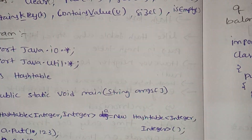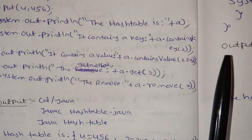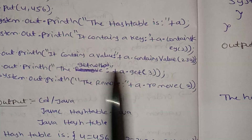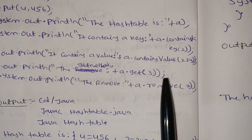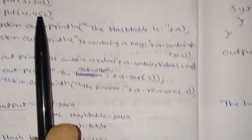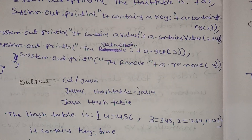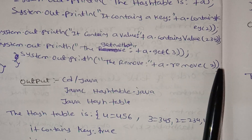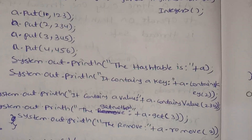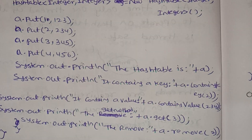The get method retrieves the value for a given key. For example, a.get(3) returns the value associated with key 3, which would be 4. containsValue returns true or false. The remove method: a.remove(2) removes the entry with key 2.